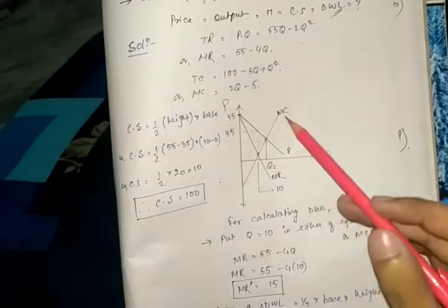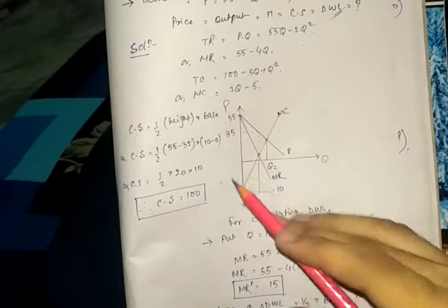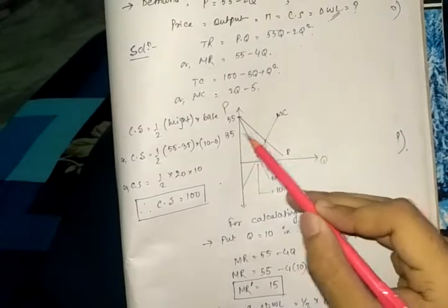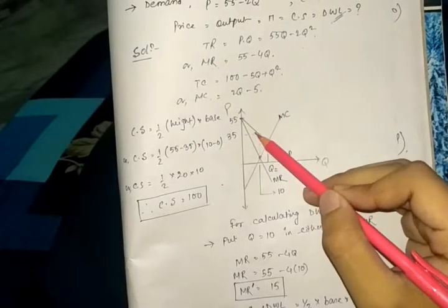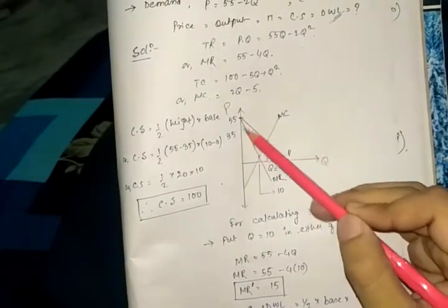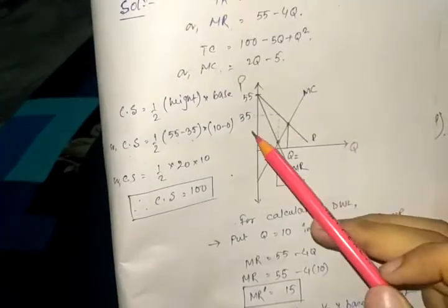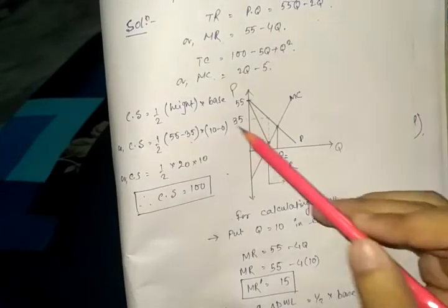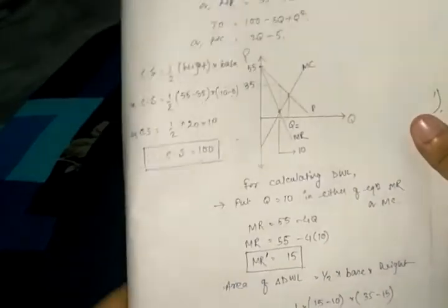Now we calculate consumer surplus. Consumer surplus is the area below the demand curve and above the price line. As I showed in my previous video, for a triangle it is half into base into height. Height = 55 minus 35 = 20, base = 10 minus 0 = 10. So consumer surplus = half × 20 × 10 = 100.